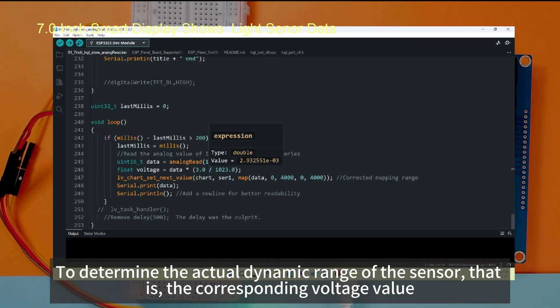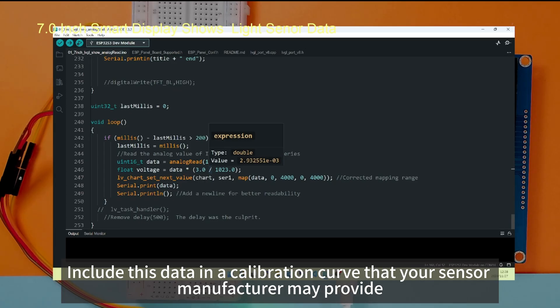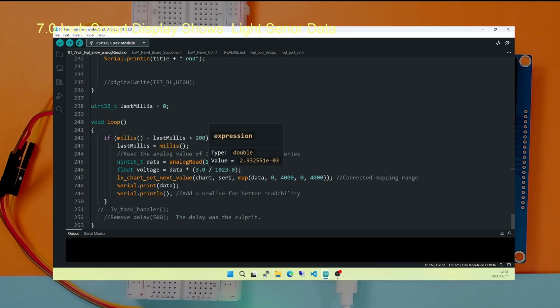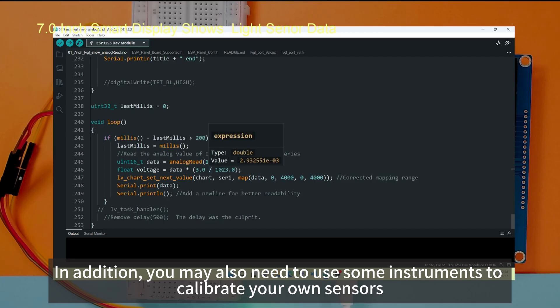To determine the actual dynamic range of the sensor, that is, the corresponding voltage value, include this data in a calibration curve that your sensor manufacturer may provide. In addition, you may also need to use some instruments to calibrate your own sensors.